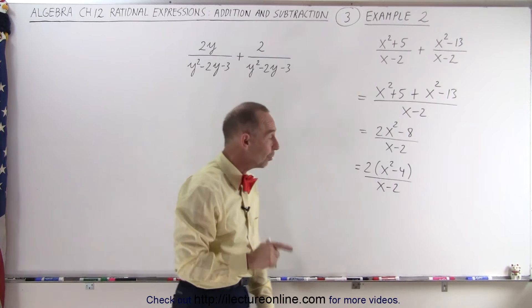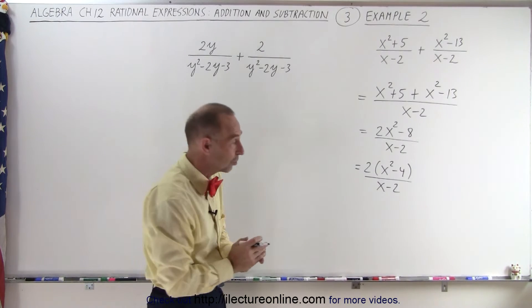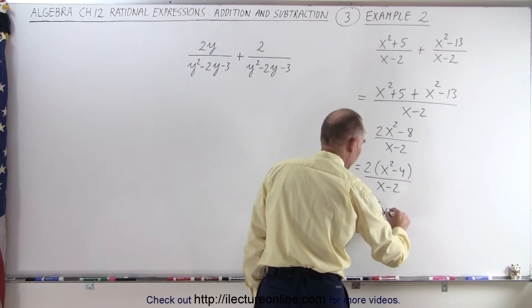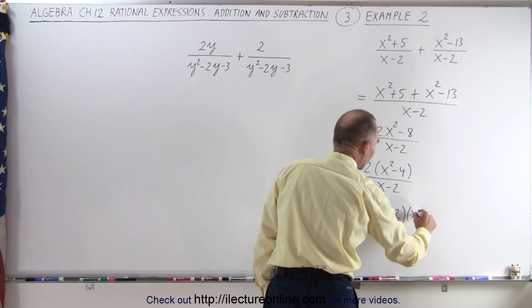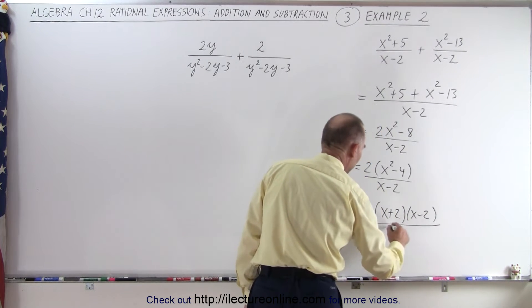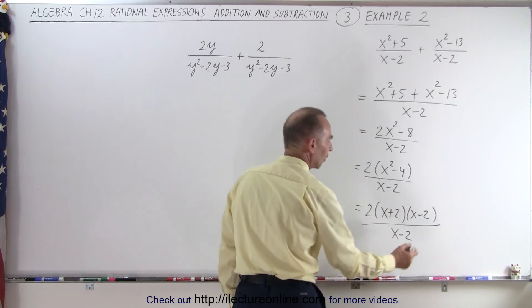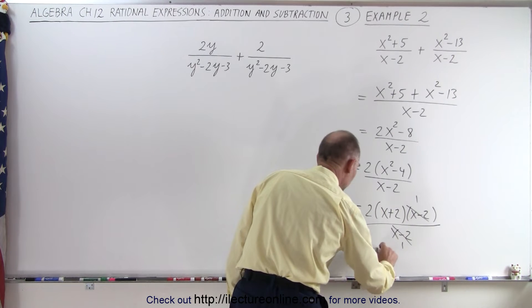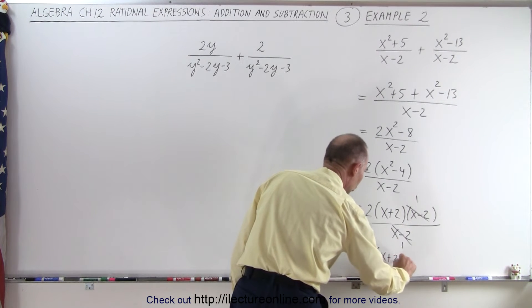And now we realize that in the numerator we have the difference of squares. So this can be written as 2 times x plus 2 times x minus 2. In the denominator we have an x minus 2. So notice that these are common, so we can go ahead and simplify that. So this can now be written as 2 times x plus 2.